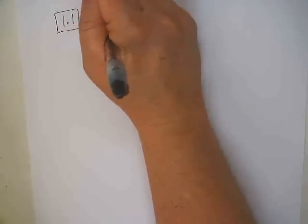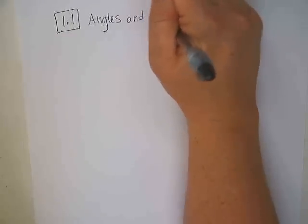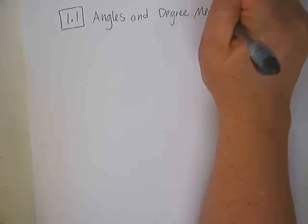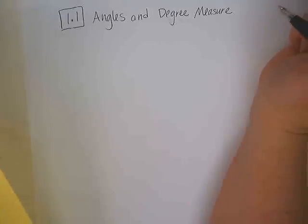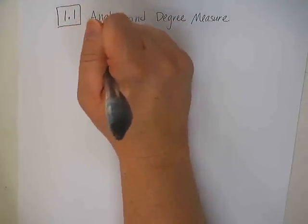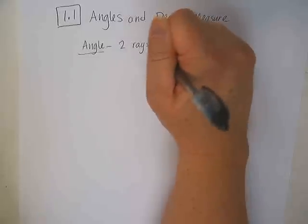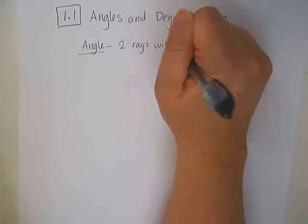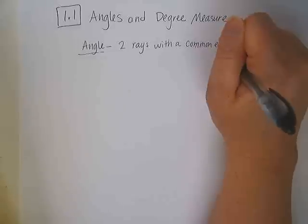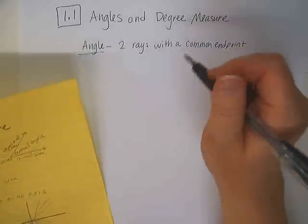Section 1.1: Angles and Degree Measure. Okay, just a little bit of a review from geometry. An angle consists of two rays with a common endpoint. We're really starting basic here.